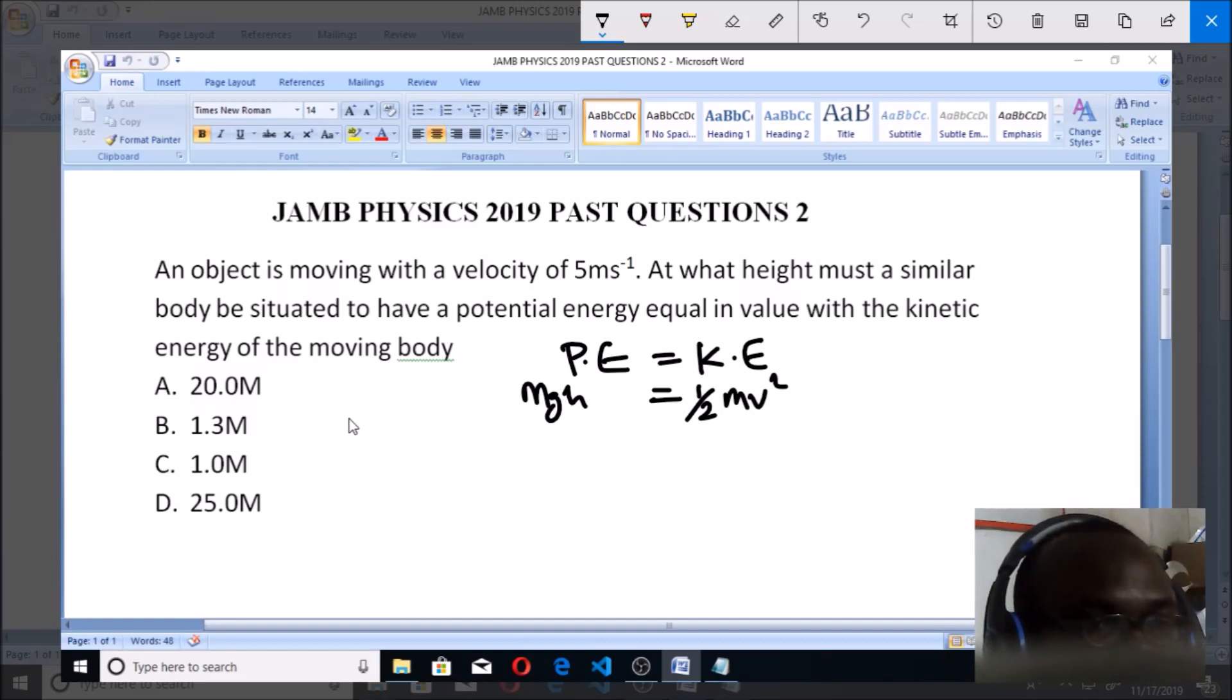We're given that this body is moving at a velocity of 5 meters per second. We all know that the value of g is 10 meters per second squared, which is acceleration due to gravity. We're told to find at what height must the body be situated, so we're looking for h.